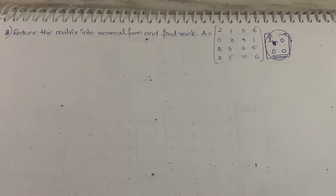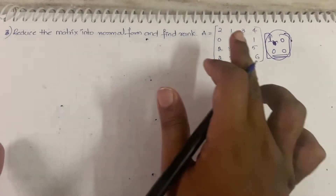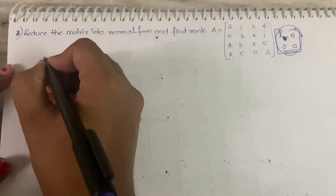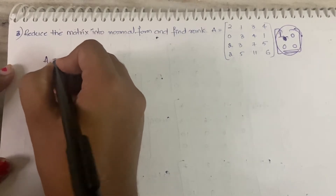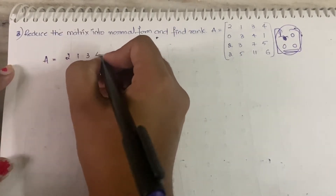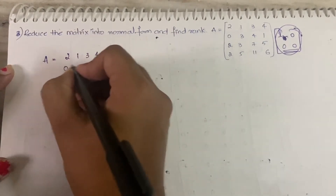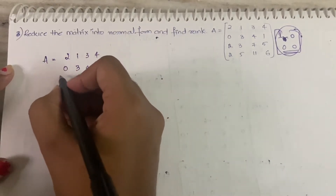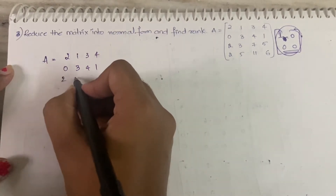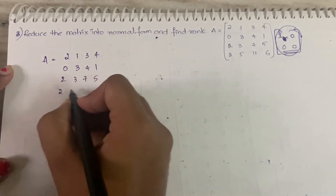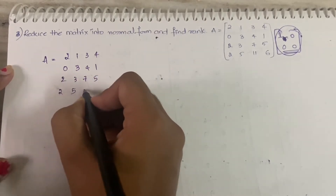Now let us try to get an identity matrix. In order to get the identity matrix, first let us write our matrix as it is. So A is equal to: row 1: 2, 1, 3, 4; row 2: 0, 3, 4, 1; row 3: 2, 3, 7, 5; row 4: 2, 5, 11, 6.